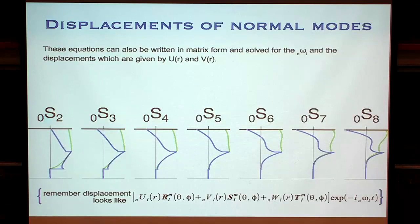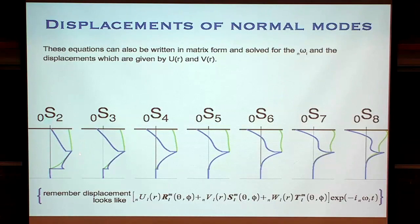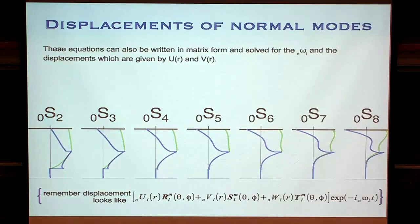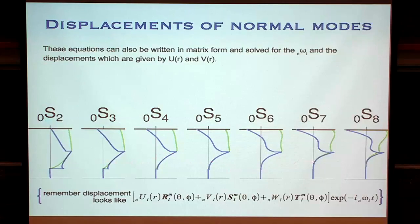We've got a whole bunch of modes here. This is 0S2. For 0S2, the inner core boundary is just here, the core-mantle boundary just here. There's lots of motion in the mantle, lots in the outer core, and a tiny bit in the inner core. When we let L increase — the angular order, telling us about zeros around the surface — we also see that what happens as a function of depth changes in what looks like a systematic fashion: there's less going on at depth as L increases.